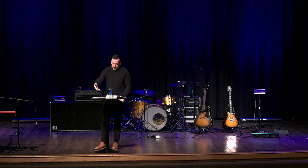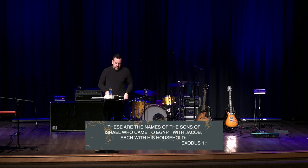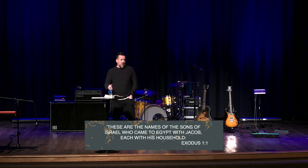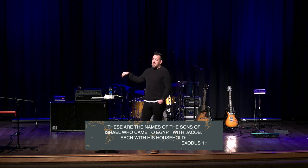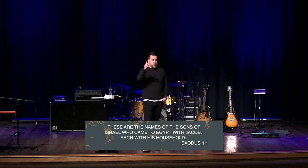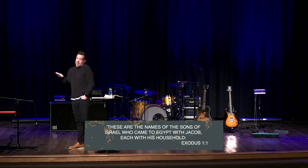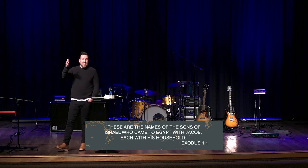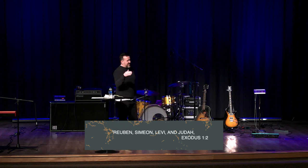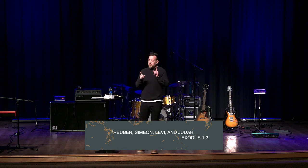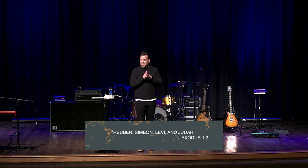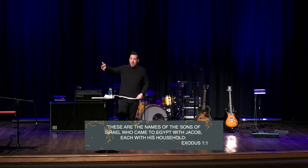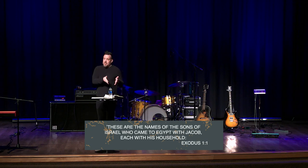Exodus chapter one, verse one: 'These are the names of the sons of Israel who came to Egypt with Jacob, each with his household.' Many scholars would tell you the book of Exodus begins with the word 'and,' meaning it's a continuation from Genesis. Genesis is 50 chapters long, and it takes us here to the precipice of Exodus chapter one. Throughout Genesis and even in Exodus, Israel and the name Jacob will be used interchangeably. Jacob, son of Isaac, son of Abraham, was renamed Israel by God.